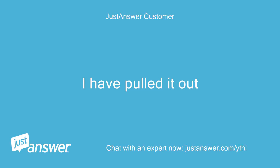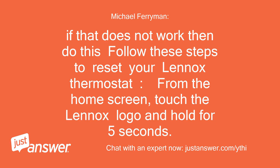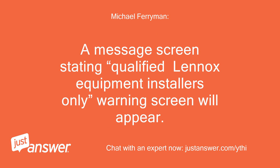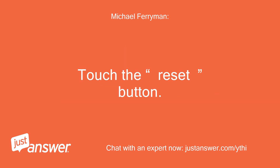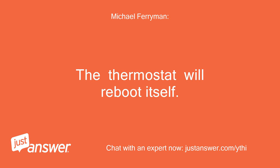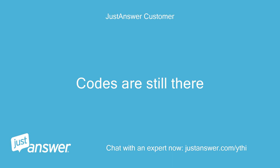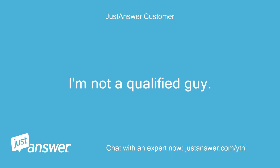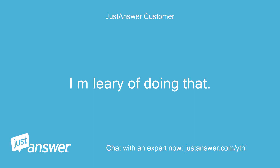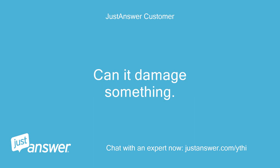I have pulled it out. If that does not work, follow these steps to reset your Lennox thermostat: from the home screen, touch the Lennox logo and hold for 5 seconds. A message screen stating 'qualified Lennox equipment installers only' warning will appear. Touch the reset button and the thermostat will reboot itself. Okay, it's starting back up. Codes are still there. I'm not a qualified guy — I am leery of doing that. Can it damage something?